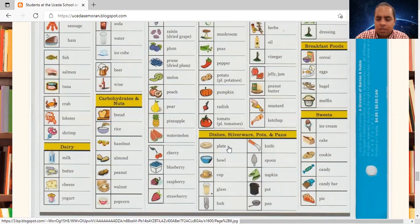Again, plate. Bowl. Cup. Glass. Fork. Knife. Spoon. Napkin. Pot. Pan.